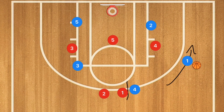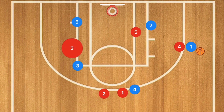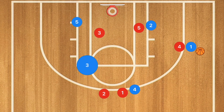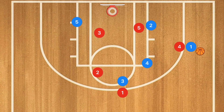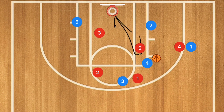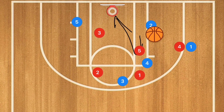Player 1 is going to dribble out towards the right side, drawing the defense over. At this time player 3 is going to set a screen for player 4, and player 4 is going to go towards the high post — this is a screen and roll, while player 3 is also moving over to set that screen. I want player 4 to get that ball and he could take that shot. What this is also going to do is bring up player 5, and if player 1's defender goes to cover that corner, player 4 can pass down to player 2 for a nice easy layup.